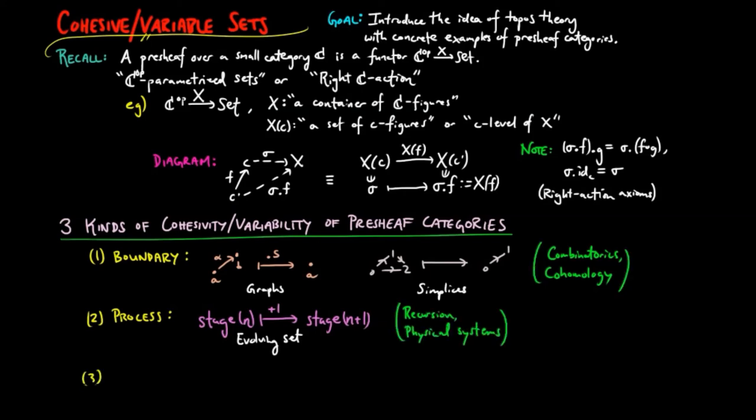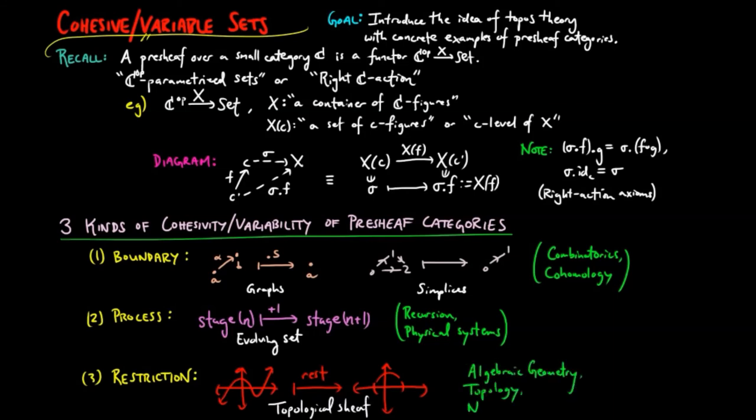The third type of cohesivity comes from restriction. So if we have a function, we may restrict the domain to obtain a function on a smaller domain. This type of cohesivity is used in algebraic geometry, topology, and even number theory. While this third type is the typical introduction to presheaves and sheaves, we instead focus on the first two types since they are often defined on finite or finitely generated categories.